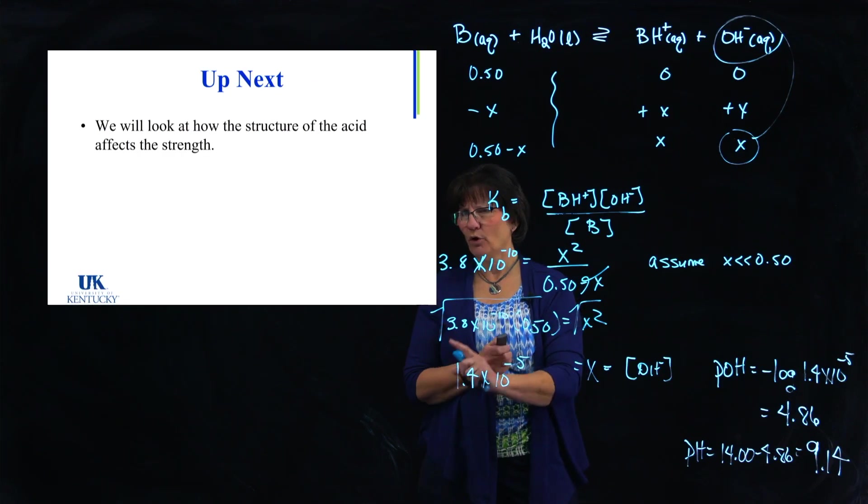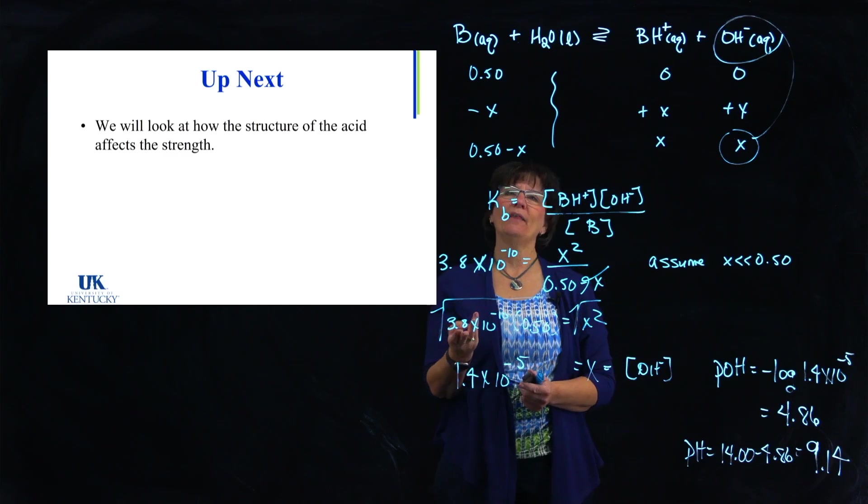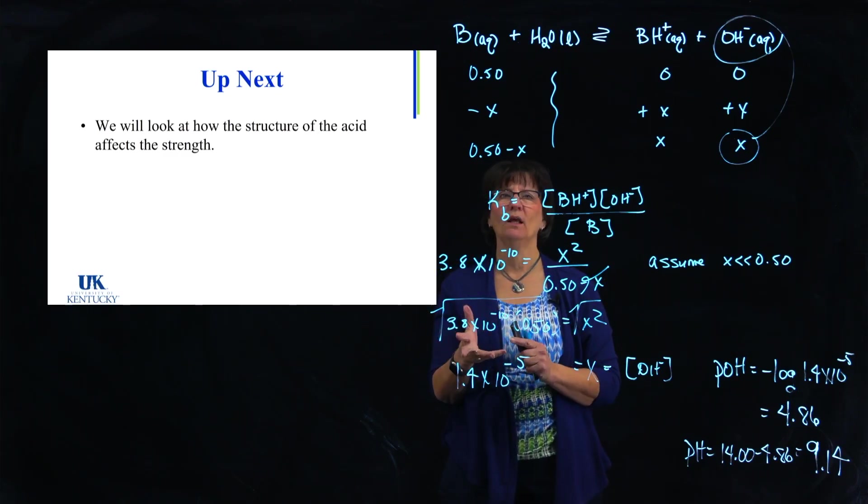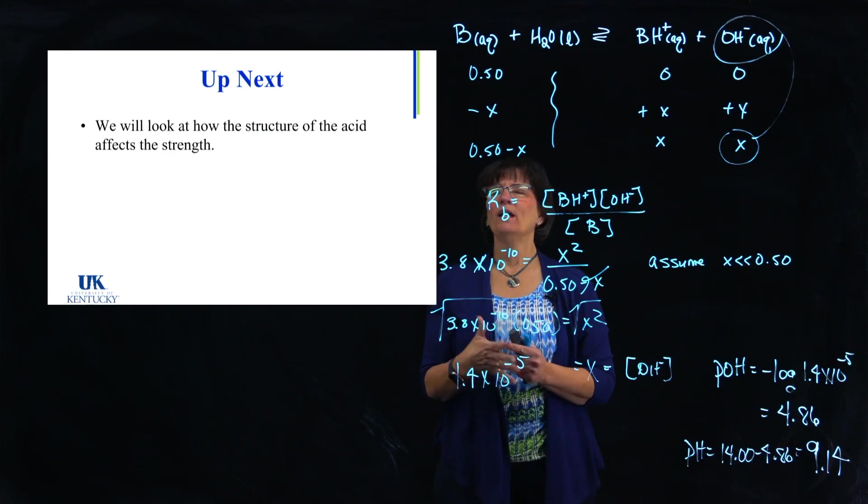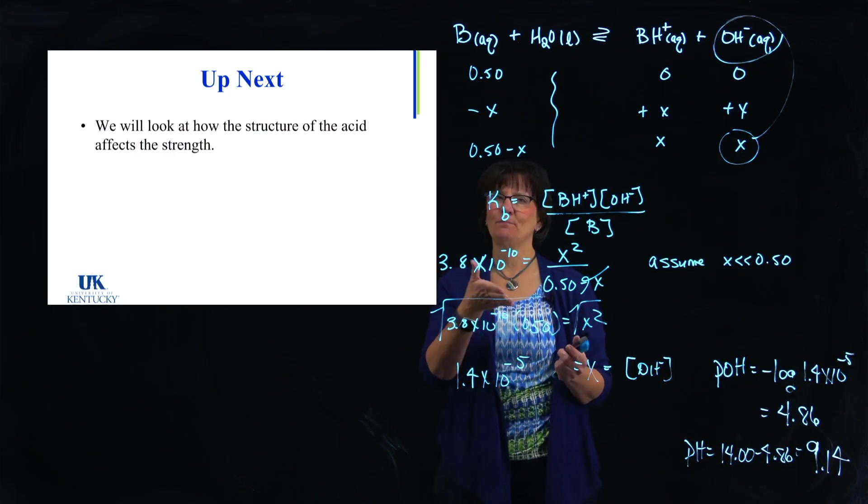So we have worked our way through several different calculations of weak bases. And what we're going to work on next is we're going to go back to acids again. And we're going to look at the molecular structure of those acids and how we can look at that to determine acid strength. We can say, between two acids, who should be stronger based upon their structure?